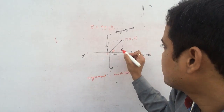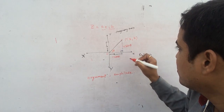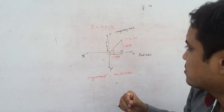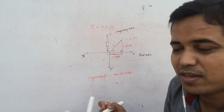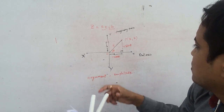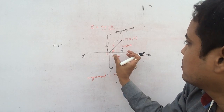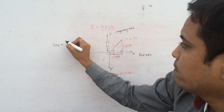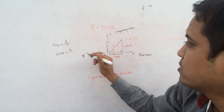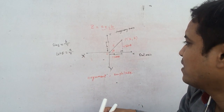A can be written as R cos θ, and B can be written as R sin θ. Why? Because R is actually the length of OP — the modulus. Sin θ is the ratio of perpendicular to hypotenuse: perpendicular is B and hypotenuse is R. Cos θ is the ratio of base to hypotenuse: base is A and hypotenuse is R. So B = R sin θ and A = R cos θ.